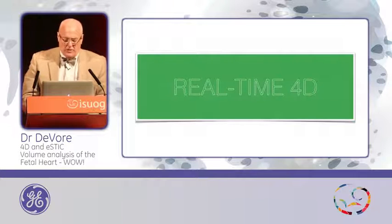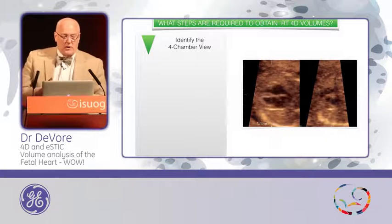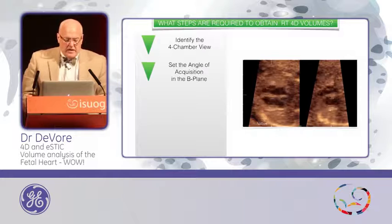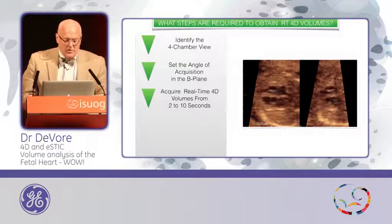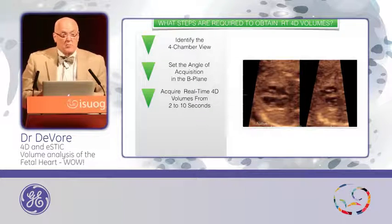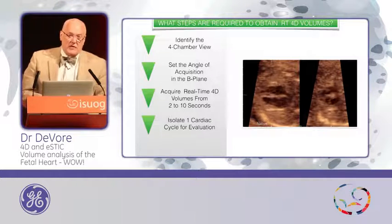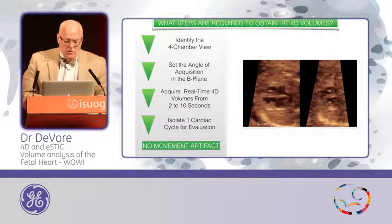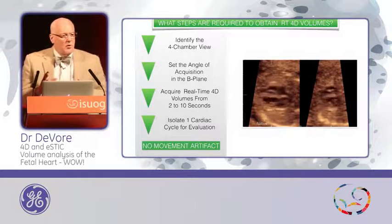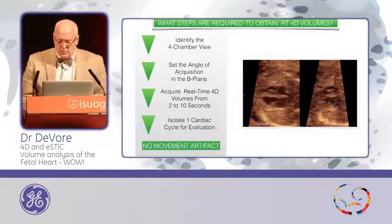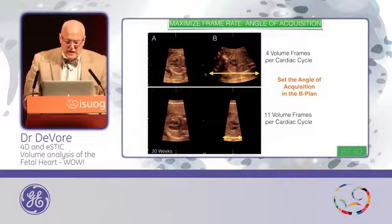This began with real-time 4D. The way it is accomplished is as follows. First, you identify the four-chamber view. Then you set the angle of acquisition of the B plane. Thirdly, you acquire the real-time 4D volume — you can record from 2 to 10 or 20 seconds. You have the option to isolate a single cardiac cycle for analysis. And there is no movement artifact. There's no movement artifact in the B or C planes because you're acquiring these volumes so quickly.